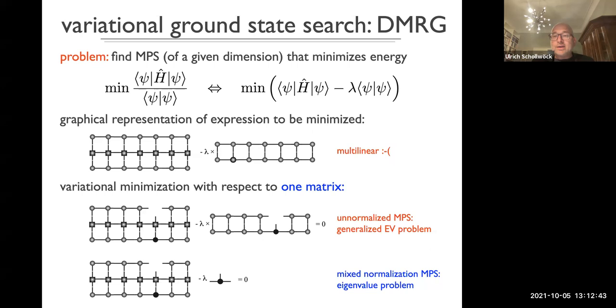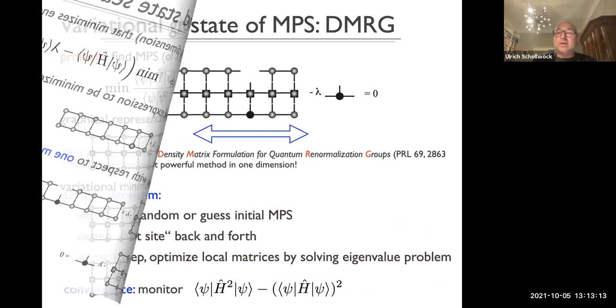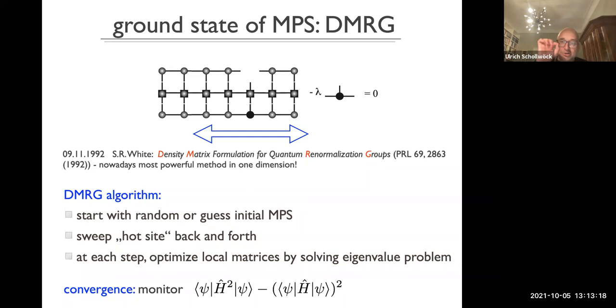The problem is the eigenvalue problem is huge. The dimension is typically of the order of 10 million to 100 million, depending on the number of states you keep in your matrix product state. But this is manageable by Lanczos or Jacobi-Davidson algorithms. When you do that, you have only improved the energy with respect to one matrix. To get to the ground state, what you have to do is you let this site where you optimize go forth and back. The energy will always go down. This is the fundamental idea of the DMRG algorithm to continue going forth and back and optimizing until the whole thing has converged. The proper way of monitoring it is to look at the variance of the energy.